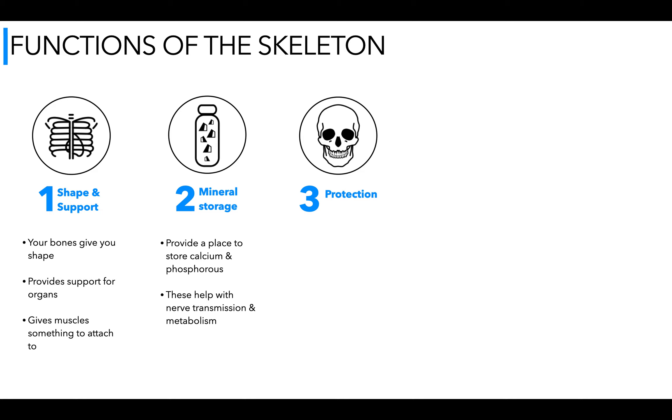Three, we have protection. As we know our bones are vital for protecting our organs and an example of that is the brain is protected by the cranium and another being the vertebral column protects the spinal cord. Nice and short here, just a quick recap.